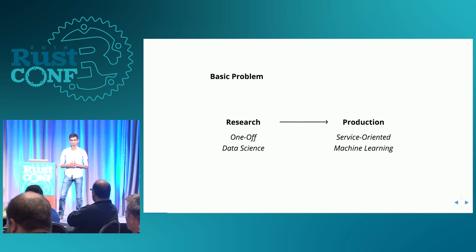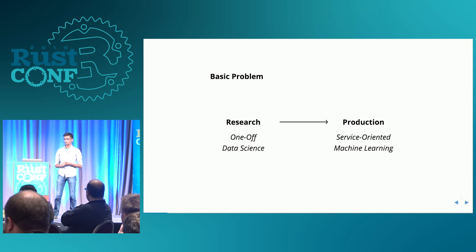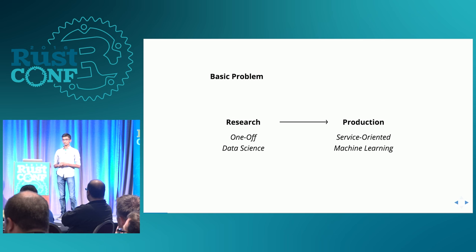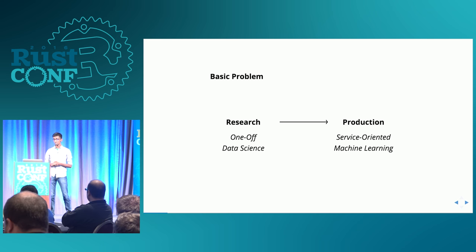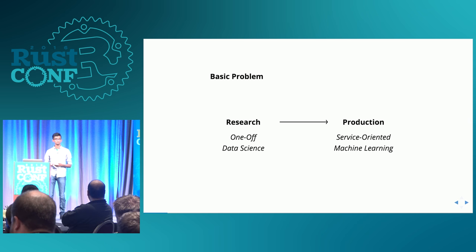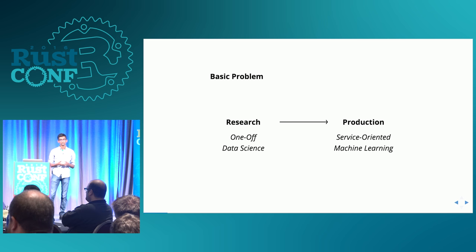The basic motivation for this talk is the problem that a lot of data scientists experience day to day — working between research and production. Research data science is one-off: you're working on your local machine, maybe loading Python notebooks, doing data analysis, maybe building models. Production data science is where you're building machine learning models that work in the cloud or on some device. There are real engineering constraints like any software product — you need to think about reliability, consistency, and performance. There is a lot of technical debt associated with moving from research into production-level systems.